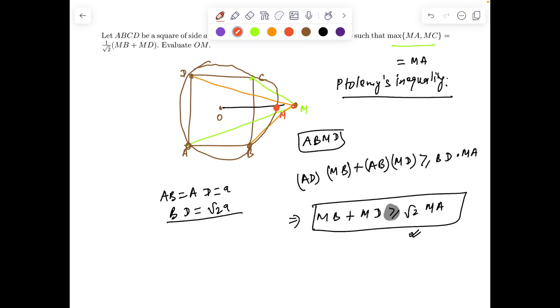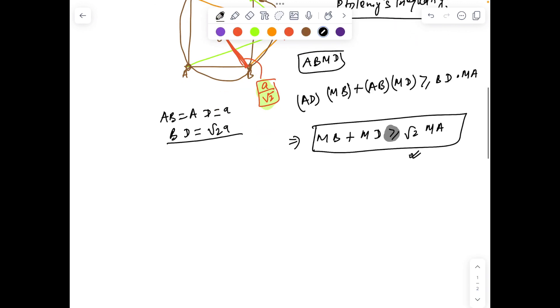Precisely on the circle which is engulfing this square ABCD. Since point M lies on the circle itself, hence the value of OM is same as the value of OB, and it's going to be just a/√2. So that's how we can solve this problem using pure geometry using Ptolemy's theorem.